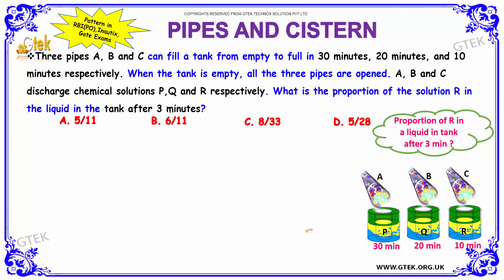Let us see our first interesting example. There are three pipes A, B, and C which can fill a tank from empty to full in 30 minutes, 20 minutes, and 10 minutes respectively. It is given that when the tank is empty, all three pipes are opened.